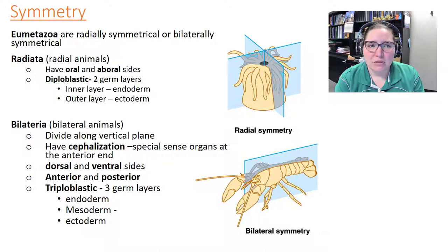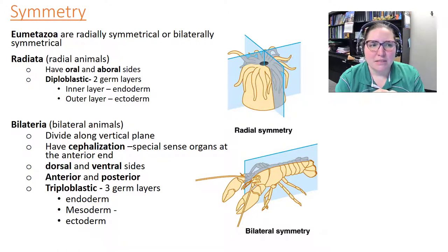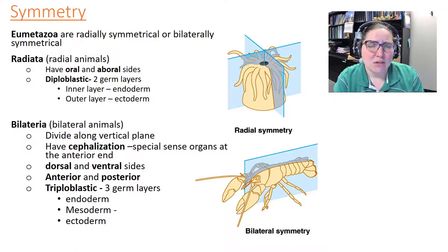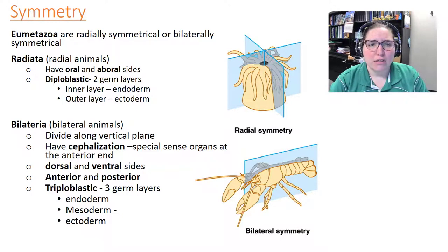Radially symmetrical organisms can be cut in half at any point and are more or less the same on either side. They have an oral and aboral side, and they are diploblastic — meaning they have two germ layers: an inner endoderm and an outer ectoderm.